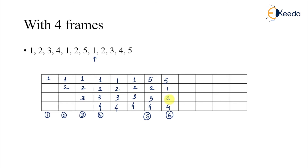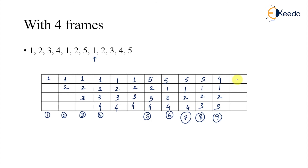Then 2 comes, replacing 3: 5, 1, 2, 4 — page fault seven. Then 3 comes — 4 goes: 5, 1, 2, 3 — page fault eight. Then 4 comes — 5 has been there the longest, so 5 is replaced: 4, 1, 2, 3 — page fault nine. Then 5 comes — 1 goes: 4, 2, 3, 5 — page fault ten. So we have seen that increasing the number of frames led to an increase in page faults.